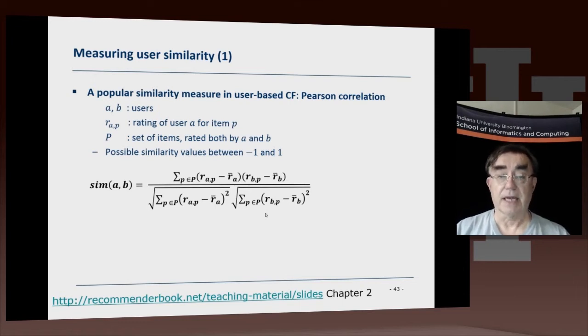Once we've found those users, we have to know how to average over their predictions of this unknown item 5 to get what Alice wants.